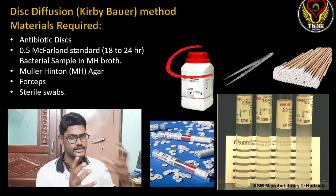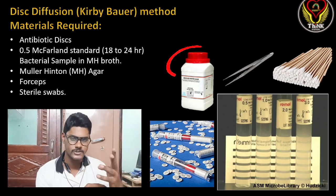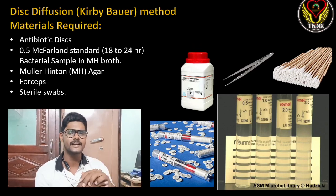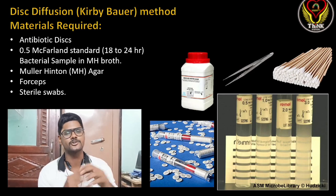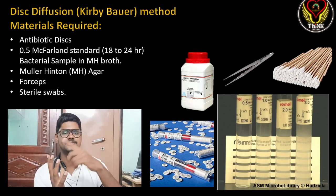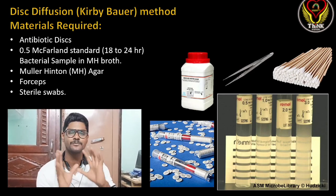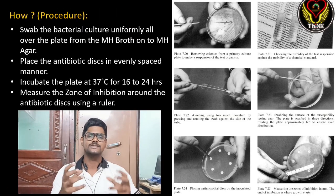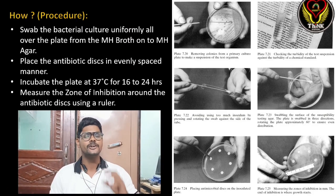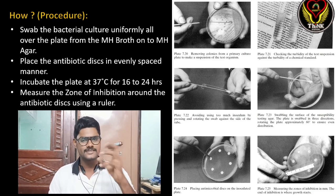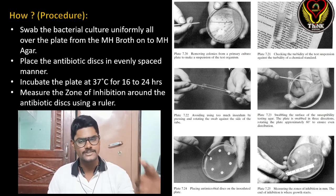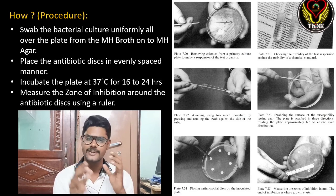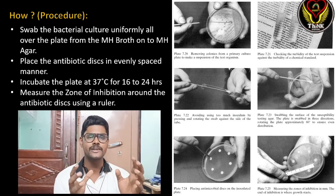The third material required is Muller-Hinton agar and Muller-Hinton broth. We also need forceps to place the antibiotic disc on the agar plate, and finally sterile swabs, which are required for swabbing our culture onto the agar plate. Coming to the procedure: first we have to select which bacteria we are going to use. If there is a bacterial infection, we isolate the bacteria from that infection.